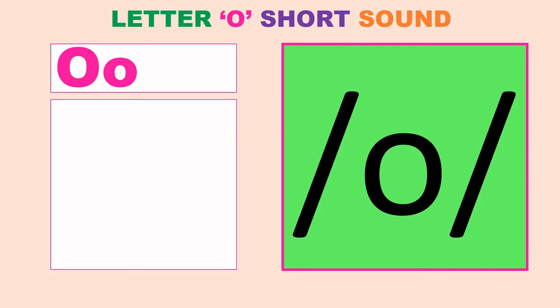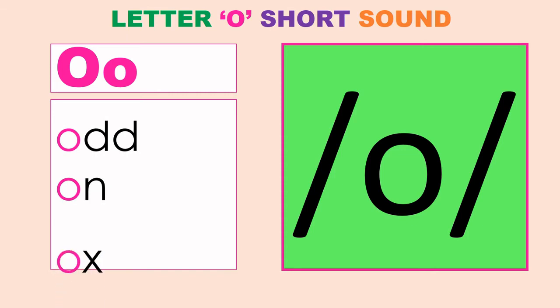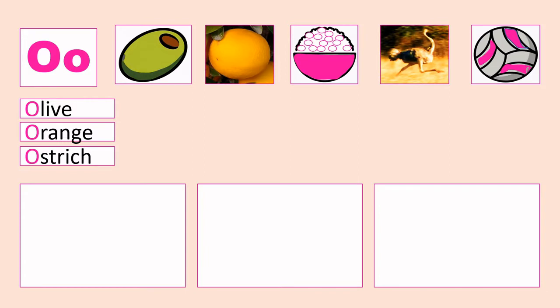Letter O short sound is O, as in odd, on, ox. It's time for 'What do you see?' There are five pictures here.